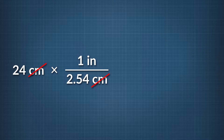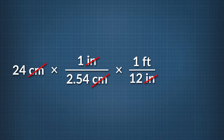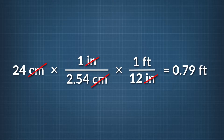Remember that when you cancel, the units must appear on both sides of the dividing line. When you cancel out the centimeters, you're left with inches. But remember, we want to find our answer in feet. So you have to add another conversion factor to convert inches into feet — that conversion factor is 1 foot to 12 inches. When you cancel out your inches, you're left with feet, what we're solving for. Your last step is simple: multiply all of the numerators and divide by all the denominators. This gives you your answer: 24 centimeters is 0.79 feet.